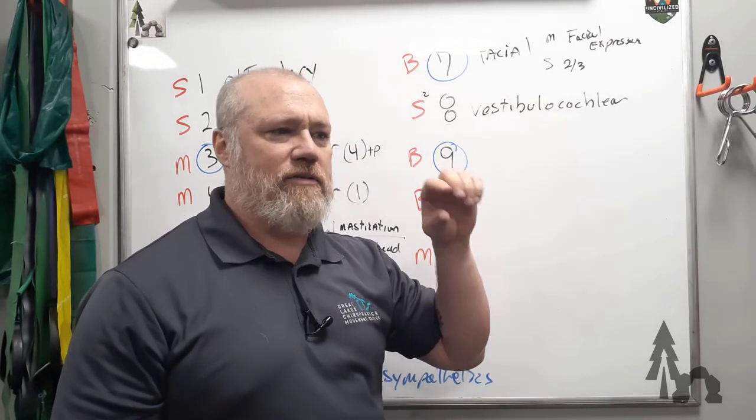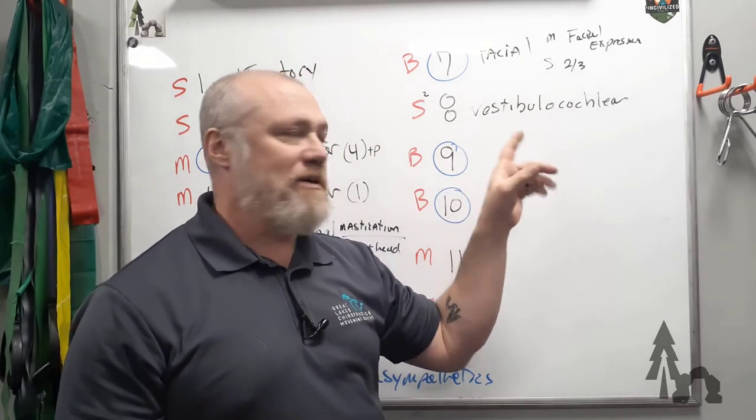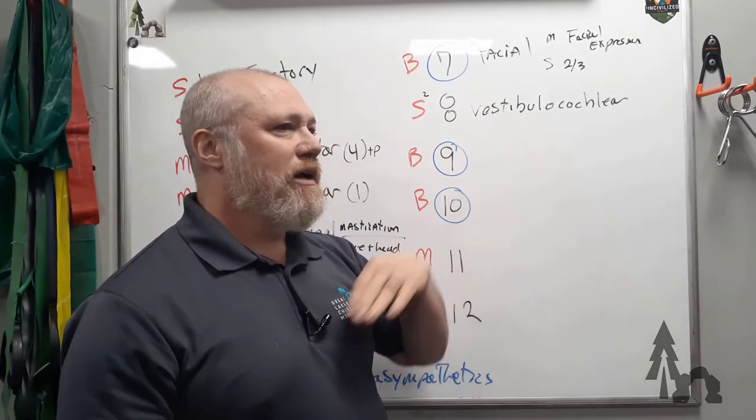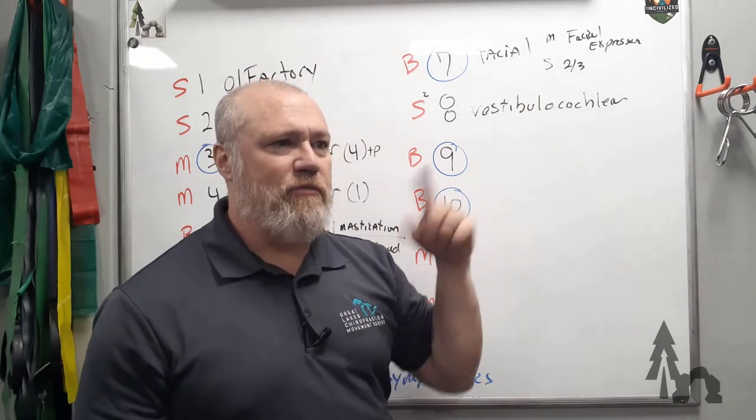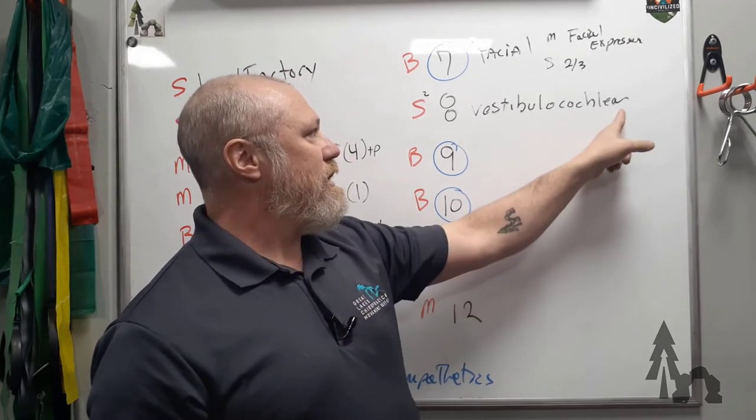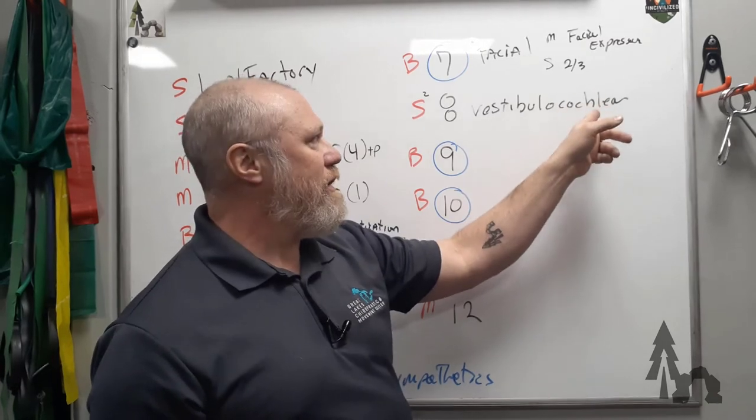And then the cochlear nerve—the cochlear portion of cranial nerve eight—which carries auditory information in.